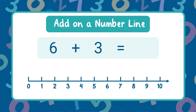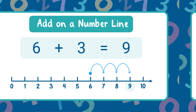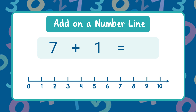Now you try — what is six plus three? Start at six and hop forward three times. You land on nine. The sum is nine. Try this one — what is seven plus one? Start at seven and hop one time. You land on eight. The sum is eight.